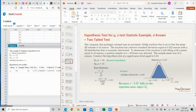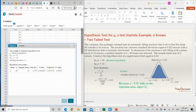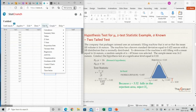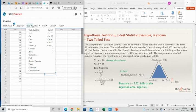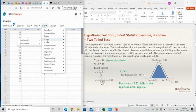The company that packages oatmeal uses an automatic filling machine that is set so that the mean fill volume is 16 ounces. So here, Stat, z is that, because in this problem, I know the population standard deviation. They tell me here, the machine has a known standard deviation equal to 0.422 ounces. If they tell you something has a known standard deviation, it's because they know the population standard deviation. So, Stat, z is that, one sample with summary.